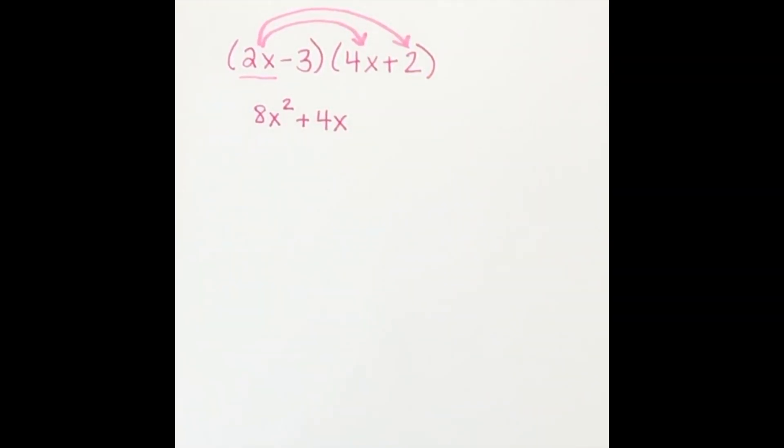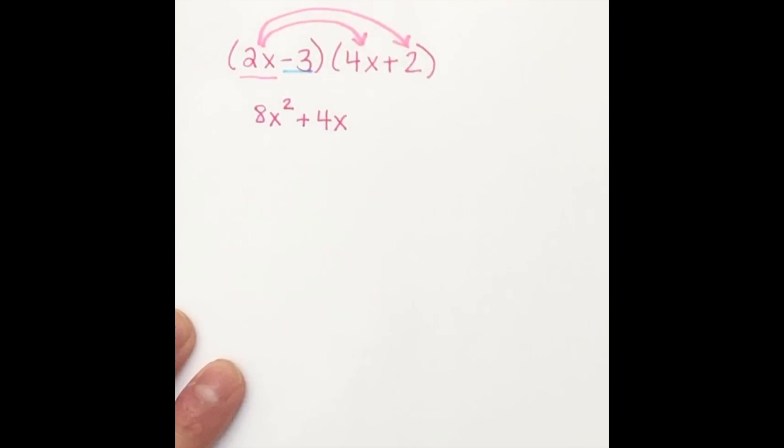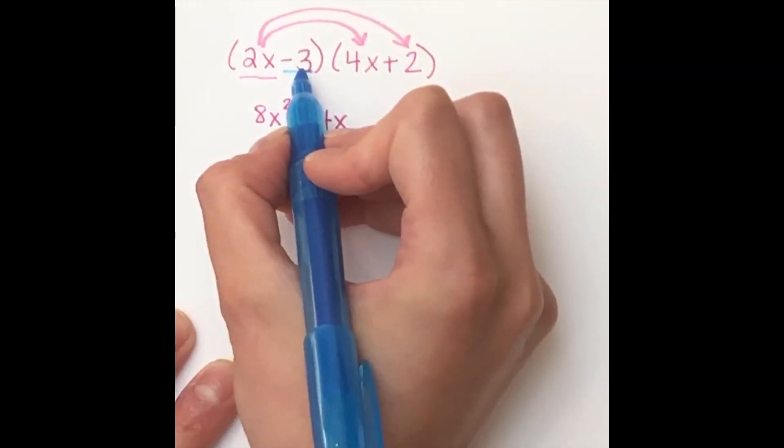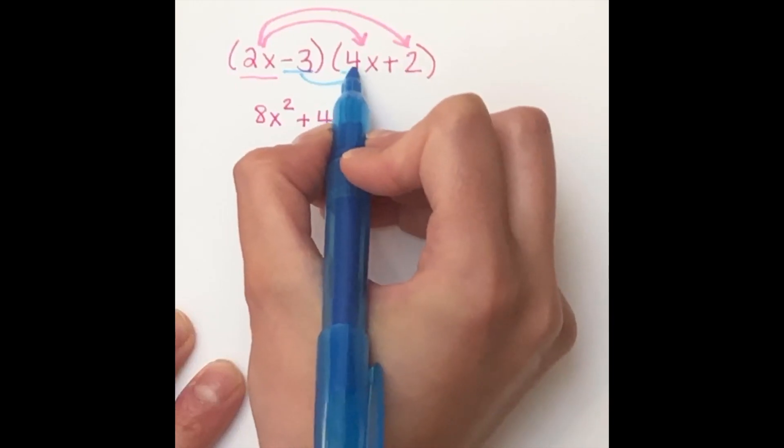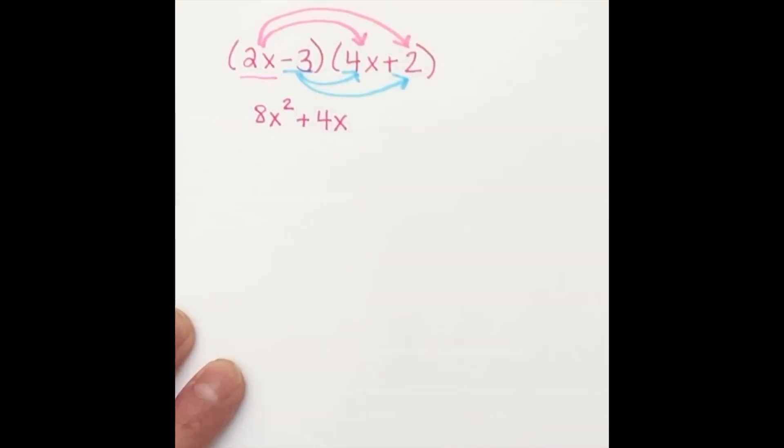Again, we can't combine those at all because the exponents are different, so they are not like terms. Next, we're going to look at the negative 3, and I'm going to do a second distribution. I'm going to take the negative 3 and multiply it to the 4x and multiply it to the 2. Hence, double distribution.